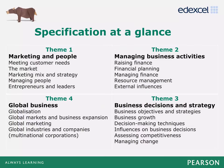Let's start by reminding ourselves of the specification structure. Theme 1 looks at marketing and people, while Theme 2 focuses on business activities, including finance and business operations. These themes have the same content in both the AS and A Level qualification. Theme 3 builds on the content in Theme 2, exploring business decisions and strategy. Theme 4 has a global focus and builds on Theme 1 content.